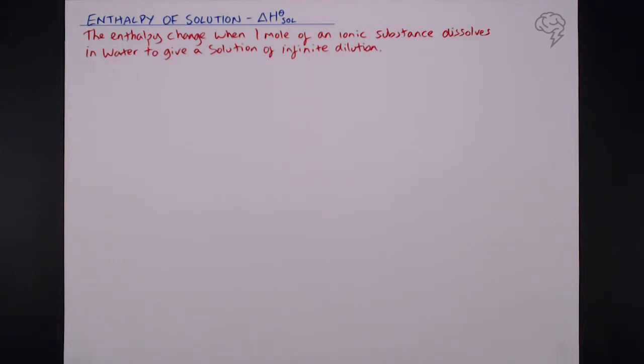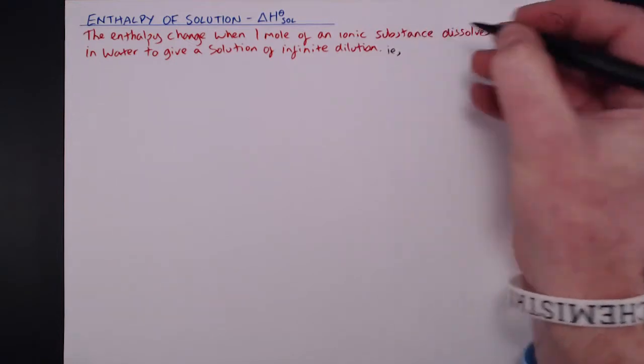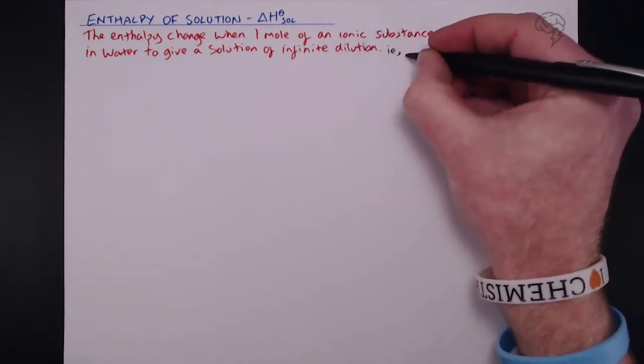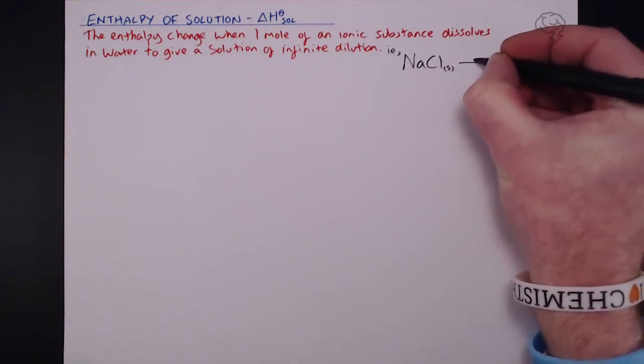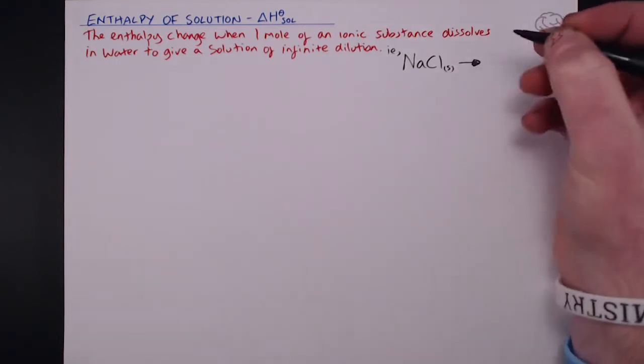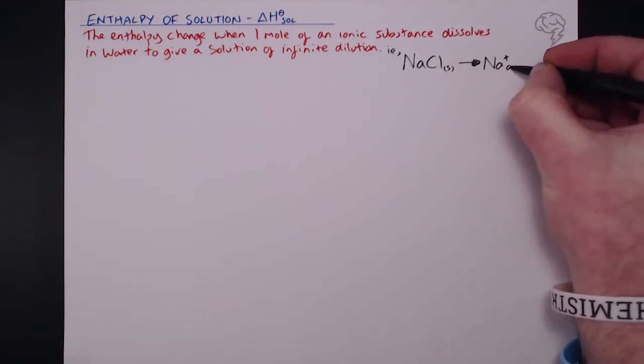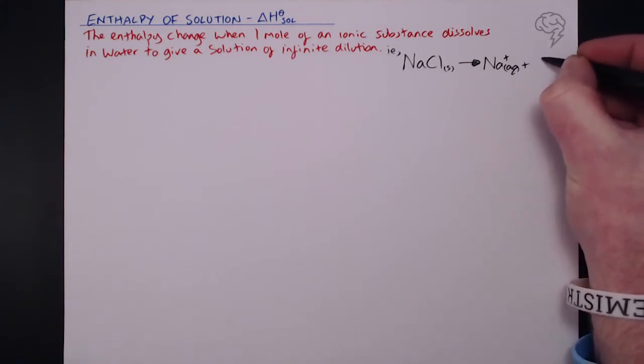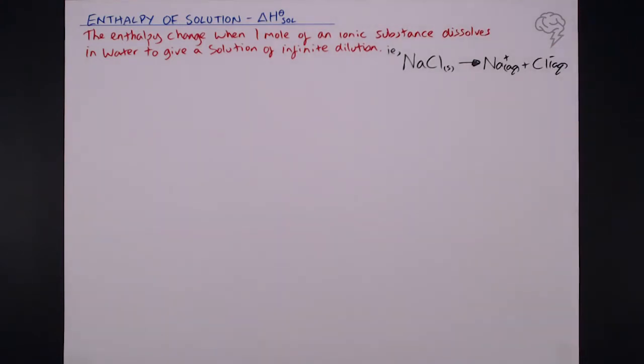So as with most definitions in chemistry, we can actually just put an equation to that. In other words, if we take one mole of an ionic substance, for example, good old sodium chloride. It's the enthalpy change when one mole of that turns into aqueous ions when it dissolves in water, so it gives Na+ aq and Cl- aq.